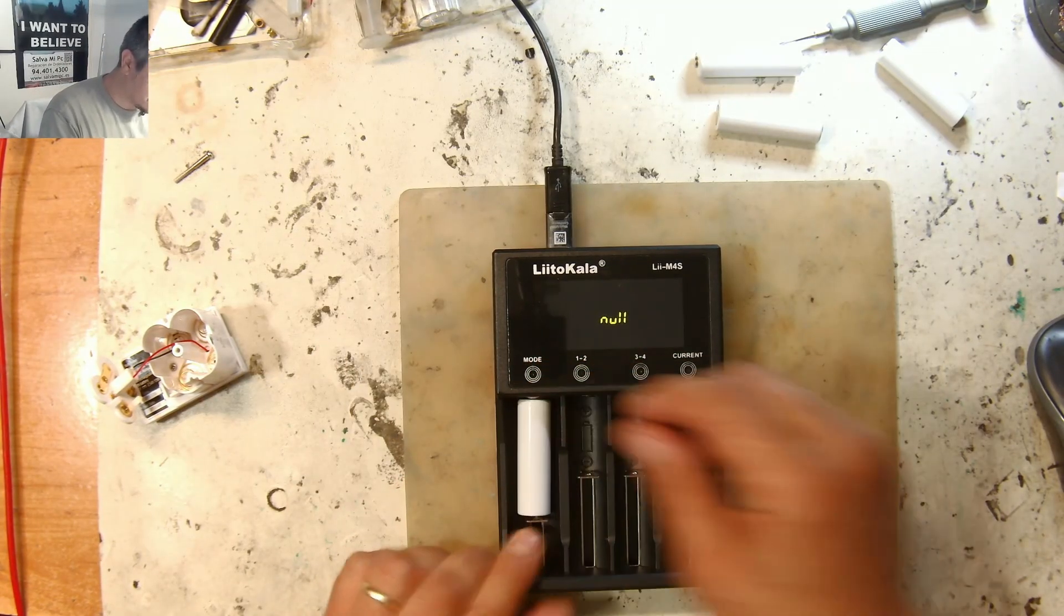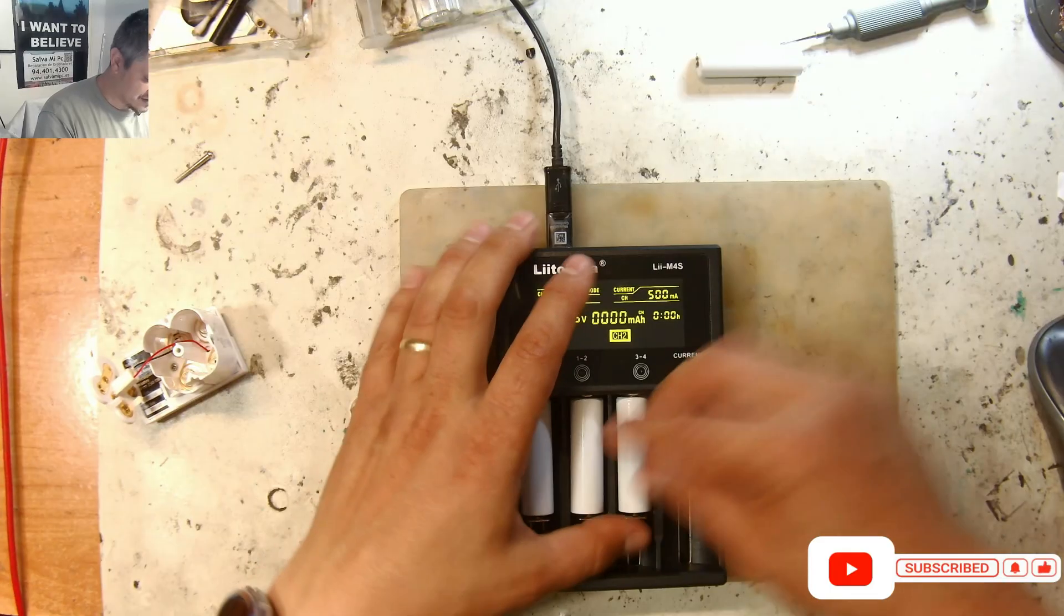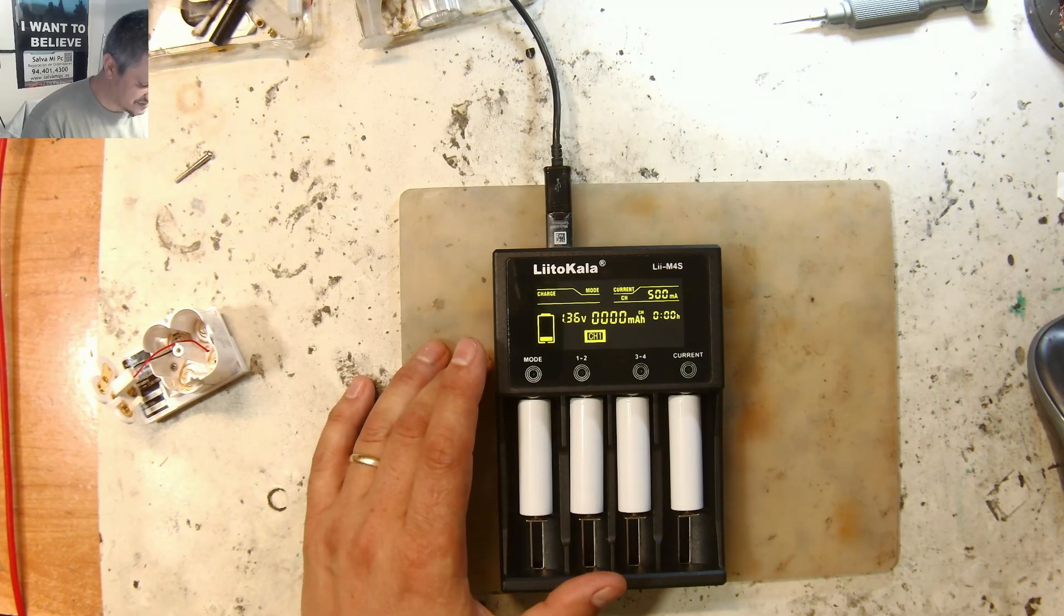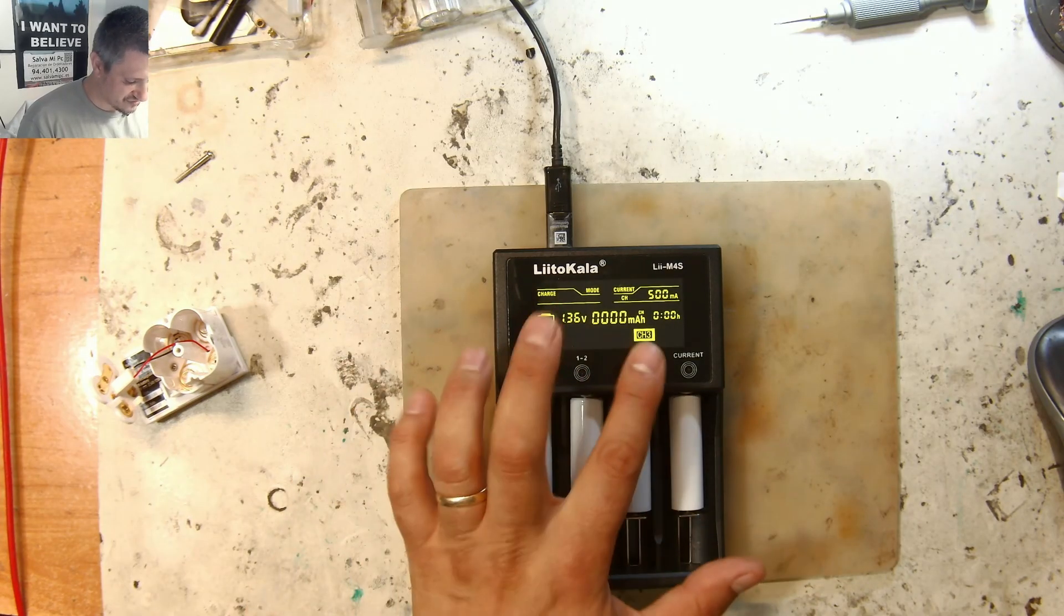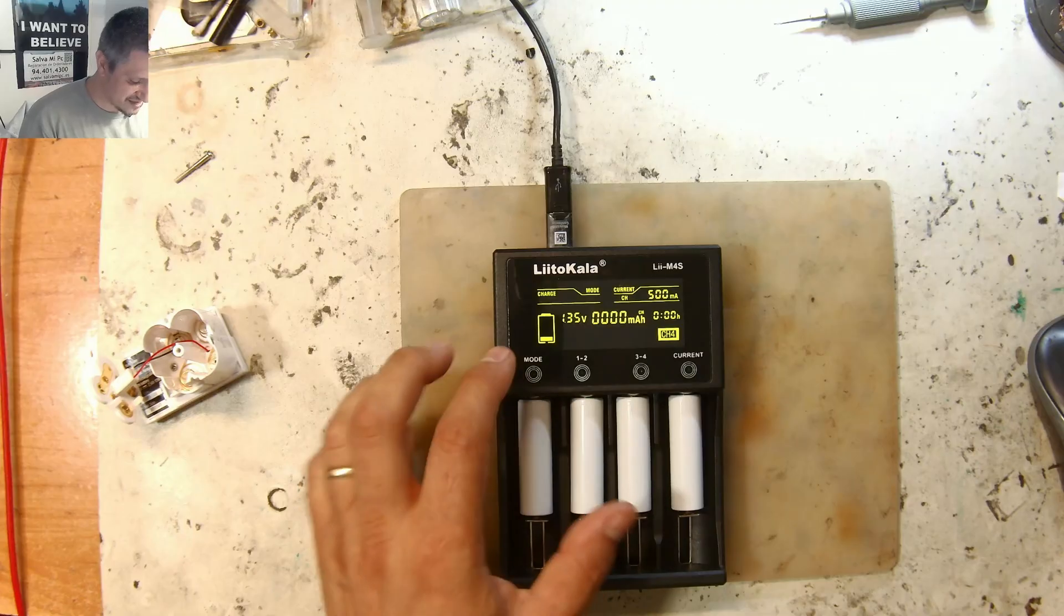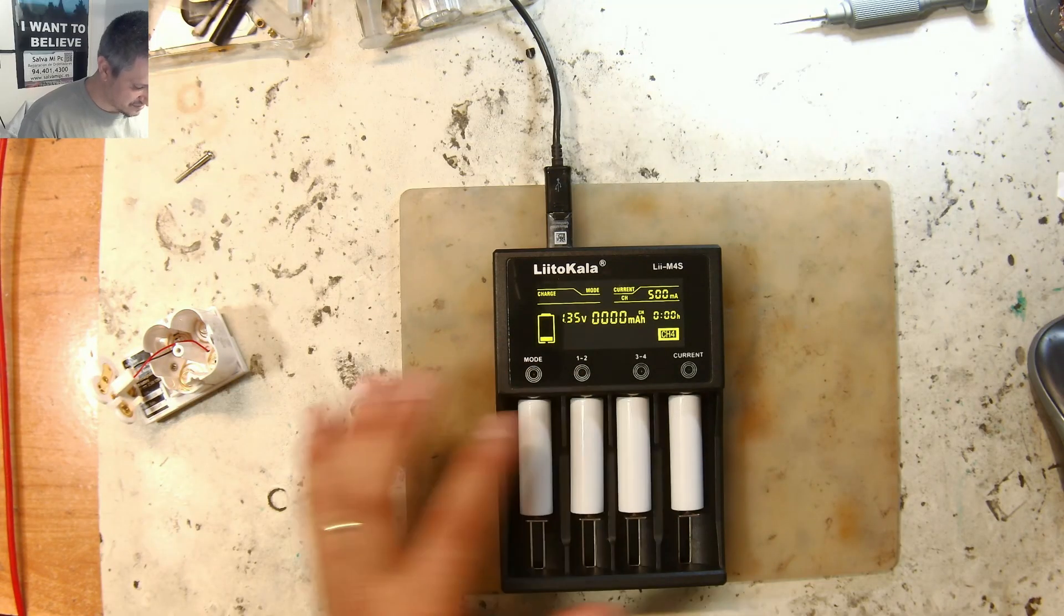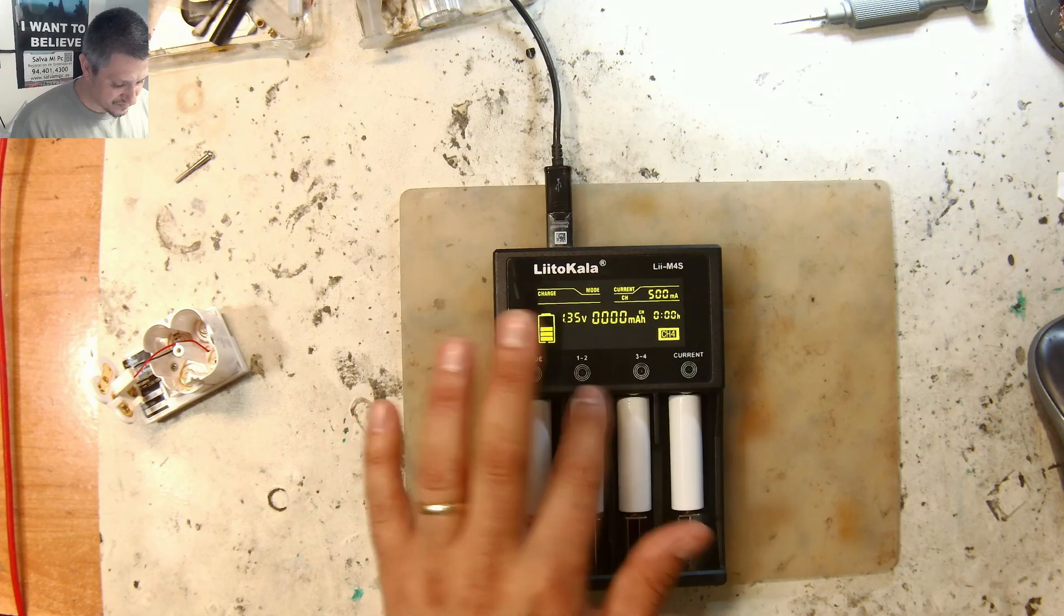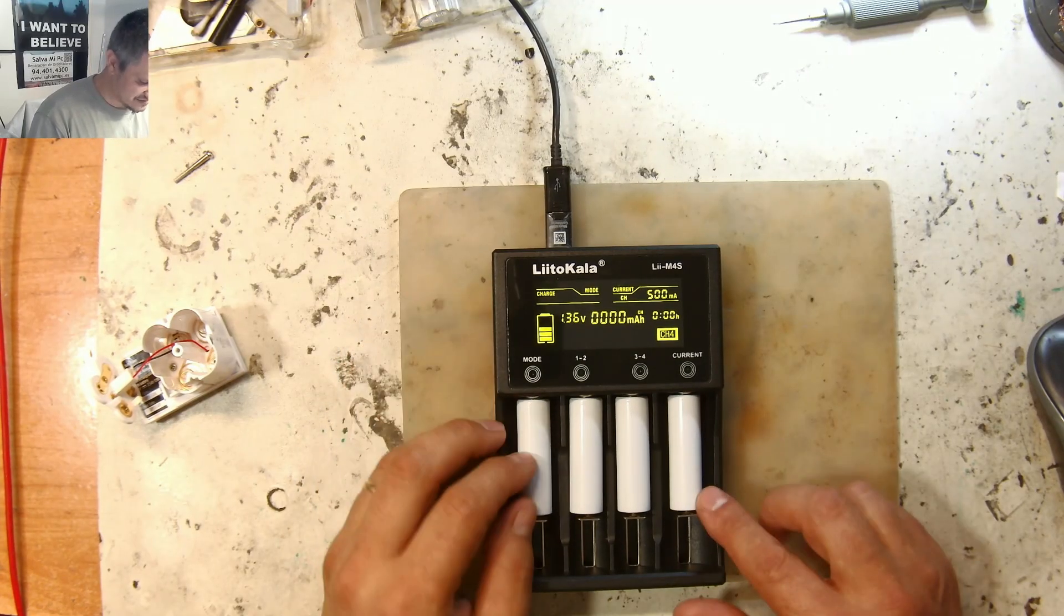So you get a charger. It doesn't have to be this one. So you put the first battery in, you put the second battery in, put the third battery in, and you put the fourth battery in. First one, charging. Second one, charging. You see, they all have pretty much the same voltage now because I charged them yesterday. But yesterday there was one of the cells. The other ones were 1.3 and one of the cells, I think it was at 1.2 or something. So it was badly balanced.